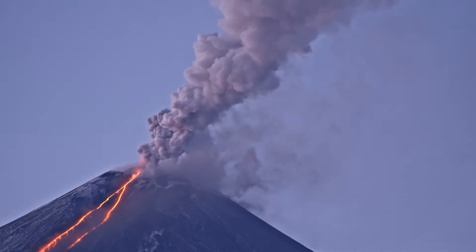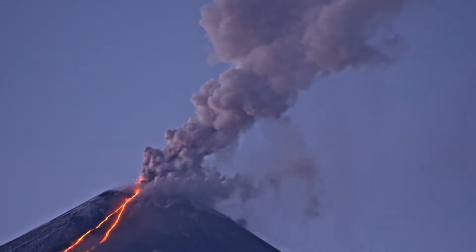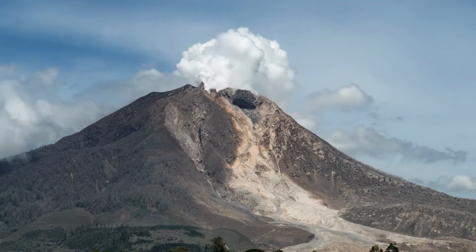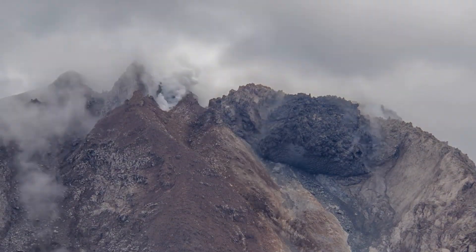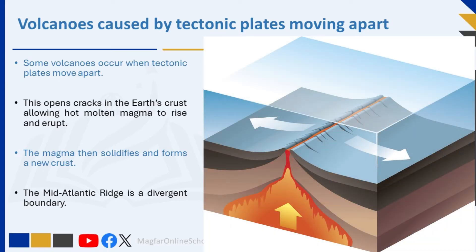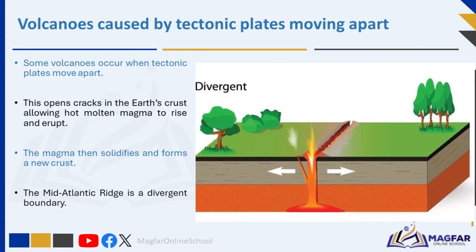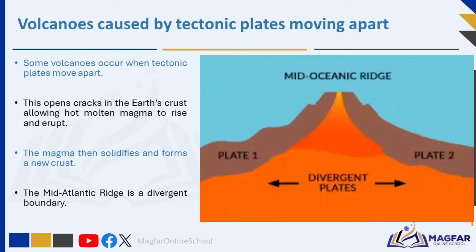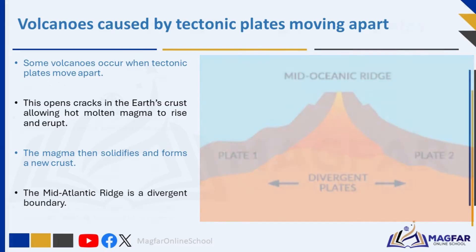Most volcanic activity is linked to plate tectonics. Volcanoes commonly occur at the boundaries of tectonic plates where they interact. At divergent boundaries, plates move apart, opening cracks in the earth's crust and allowing hot molten magma to rise and erupt. The magma then solidifies and forms new crust. The Mid-Atlantic Ridge is a divergent boundary where magma rises to the surface, forming underwater volcanoes and creating new oceanic crust.